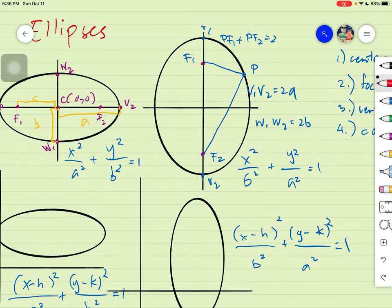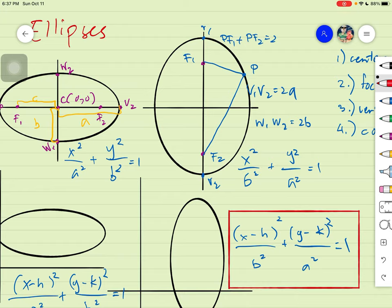Next one, para dun sa ating vertical ellipsis, we will have it like this. Ito yung formula natin. And lastly, if we have our ellipsis that is vertical in figure, but the center is not on the origin, this is the formula that we will use.